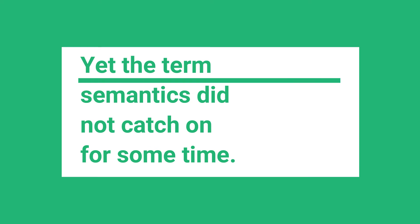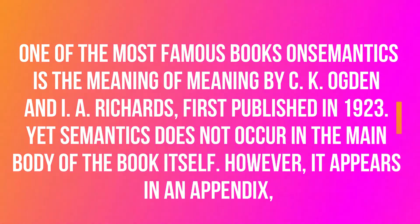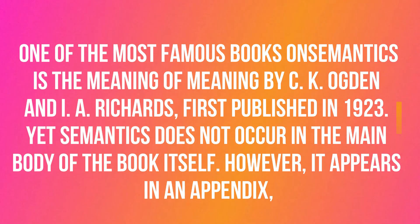But generally this term semantics was not used by many other people. Another interesting mention in this regard is the book written by Ogden and Richards, 'The Meaning of Meaning,' published in 1923. However, the word semantics does not occur in the main body of this book — it only appeared in the appendix.